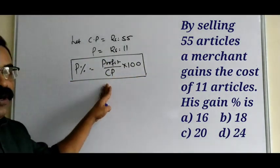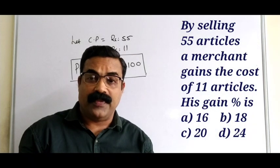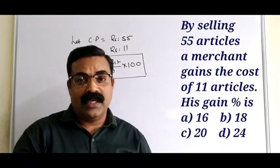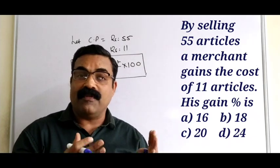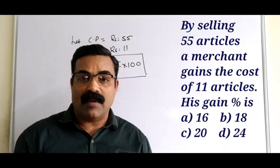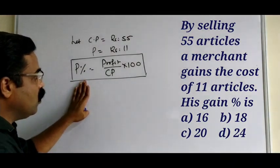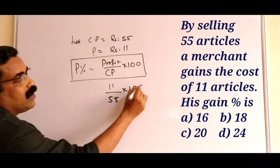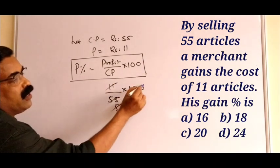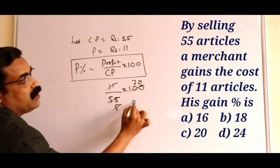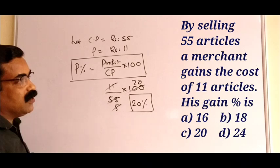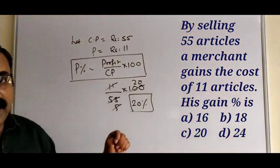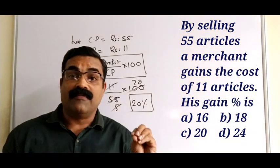The formula for profit percentage is: Profit% = (Profit ÷ CP) × 100. This formula will not change — only the questions change. So profit% = (11 ÷ 55) × 100. Simplifying: 11 and 55 cancel by 5, and 100 and 5 cancel by 20, giving profit% = 20%. These types of questions are very common in the profit and loss topic.